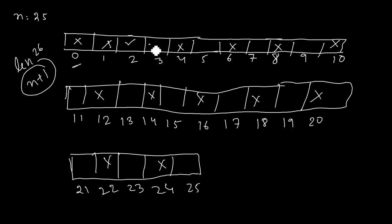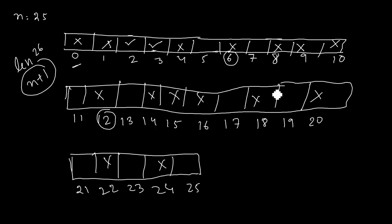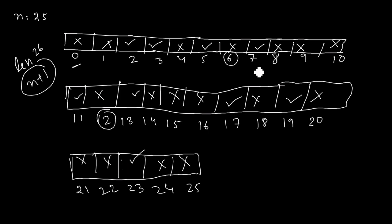We move to 3. It is not divisible by 2, so it is prime — mark it true and mark all its multiples false. Note that 6 and 12 are already marked since they are also multiples of 2, so we start marking from 9, then 15, 18, 21. For 5, multiples 10, 15, 20 are already marked, so we mark 25. All remaining — 7, 11, 13, 17, 19, 23 — are prime.